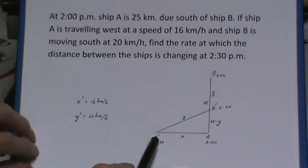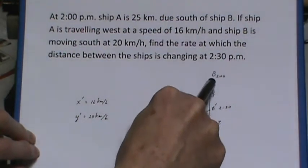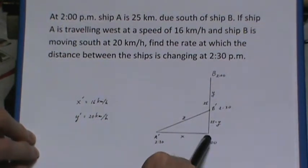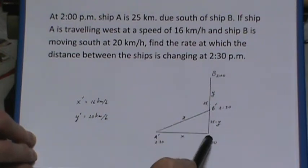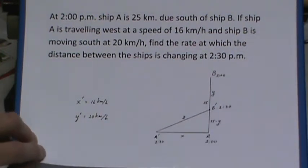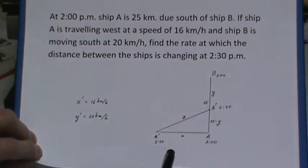Now you notice if this distance down here is y and the distance down to A is 25, this will be 25 minus y from B' to A. So I find it important to put these times on here so that I can figure out where the ships are at the various times.